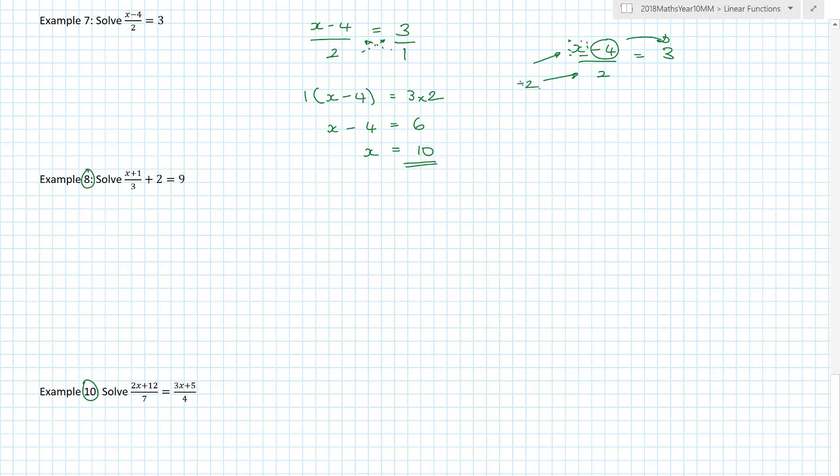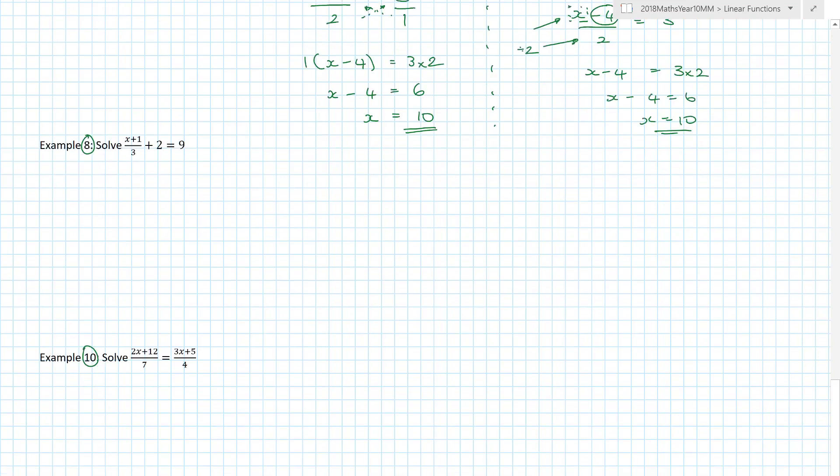I want to get rid of the bottom, which is the same as a divide by 2. So if I get rid of divide by 2, that leaves x minus 4 on the top, and I get 3 times 2 on the other side. Because how do you undo divide by 2? You times both sides by 2. We get x minus 4 equals 6, and once again, x equals 10. Two different ways, just depends which you prefer.